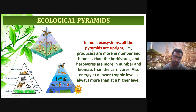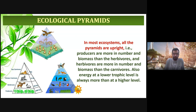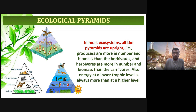In most ecosystems, all the pyramids are upright — meaning the base has a larger area and the apex is narrow. Producers are more in number and biomass than the herbivores, and herbivores are more in number and biomass than the carnivores. Energy at a lower trophic level is always more than at the higher level.